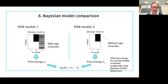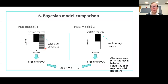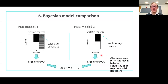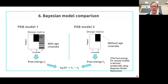An important technical detail: we don't need to separately fit both PEB models. Instead, we can fit the full model with all parameters of interest and use an analytic technique called Bayesian model reduction to derive the free energy of the reduced model. One key advantage is that it's almost instant — you can score the evidence for potentially thousands of different combinations of covariates in just a few seconds.